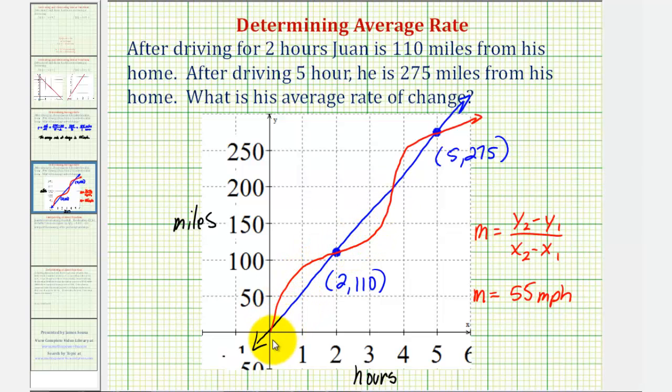So the actual data might look something like this, but the slope of this blue line does represent his average rate of change, not his instantaneous rate of change throughout the trip.